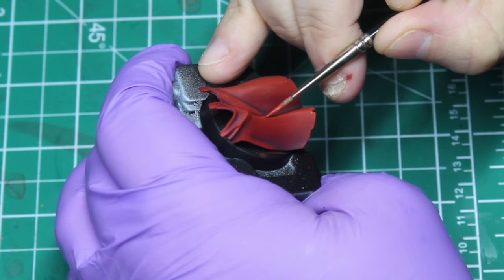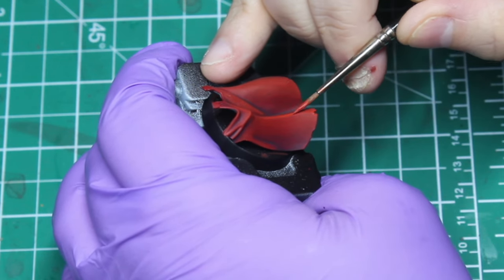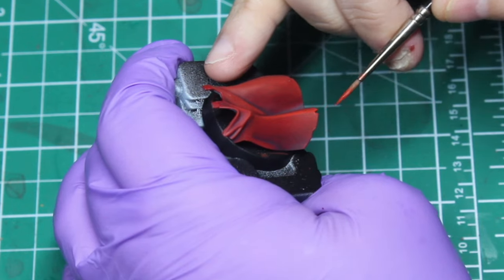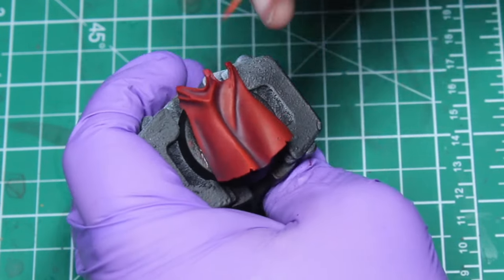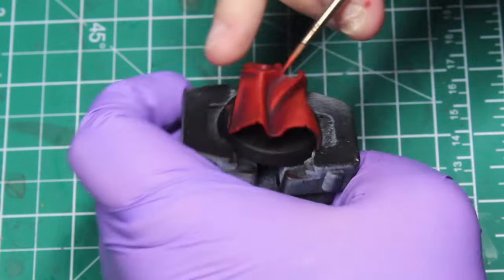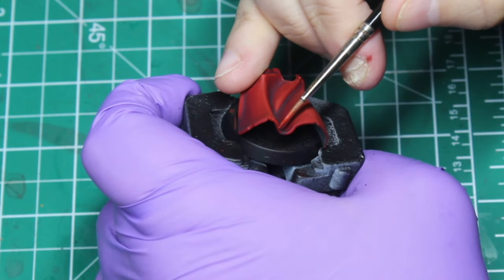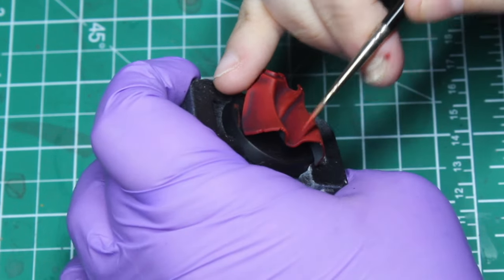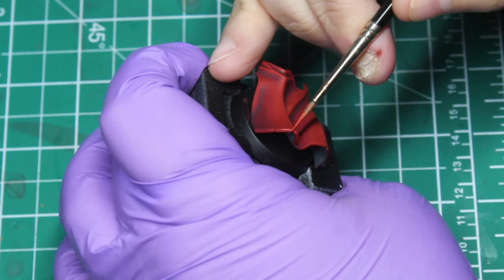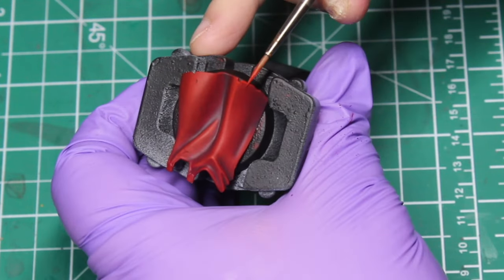Just slowly working your way around. I'm using a Series 33 size one brush at this point. Before that I was using a size two. You can do this with even a larger brush if you really wanted to, but it's got a pretty decent point on it. That's why I'm using that.